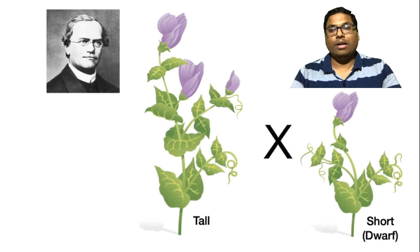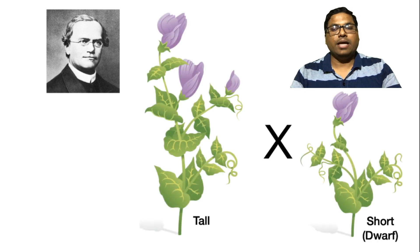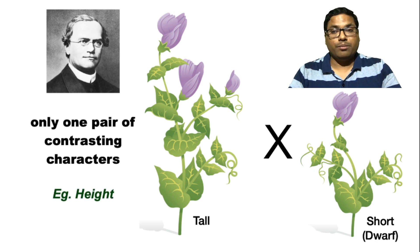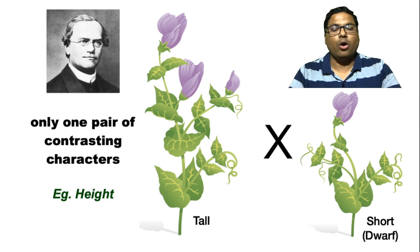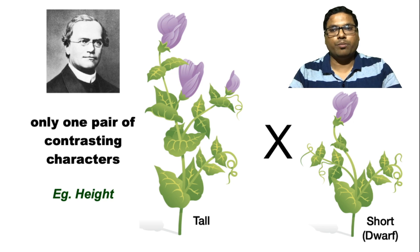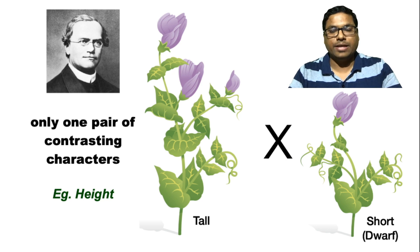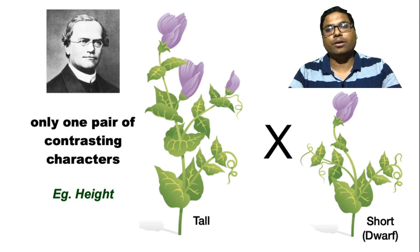In this experiment, Gregor Mendel, working on the garden pea plant, considered only one pair of contrasting characters. As you can see here, he considered plant height. One plant is tall and the other is called short or dwarf. He crossed these two plants considering only one pair of contrasting character — that is height — and that's why this cross is called a monohybrid cross.